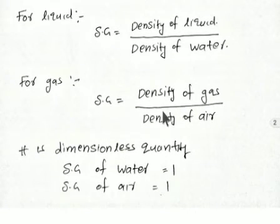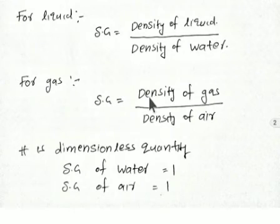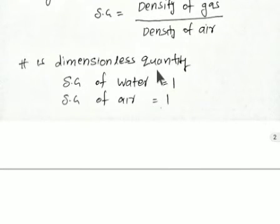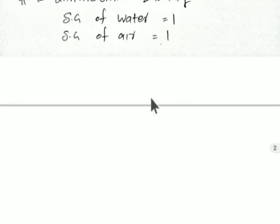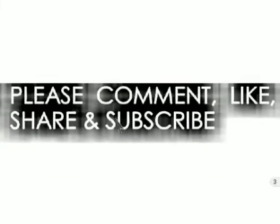For gases, specific gravity equals density of gas divided by density of air. For example, specific gravity of methane equals density of methane divided by density of air. Specific gravity is a dimensionless quantity. The specific gravity of water is always one, and the specific gravity of air is always one.